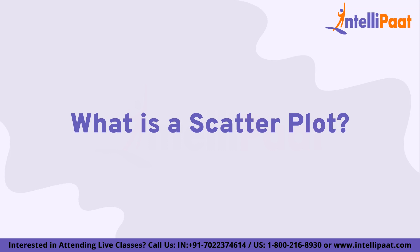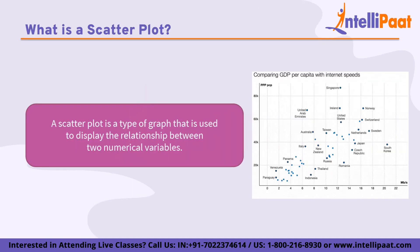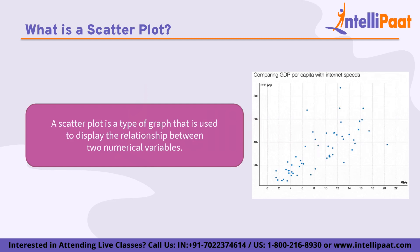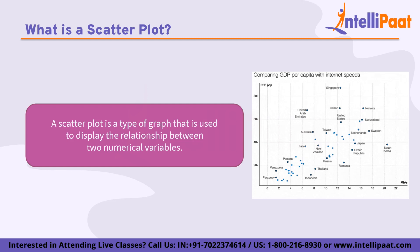Let us begin by understanding what is a scatter plot. A scatter plot, also known as a scatter diagram, is a type of graph that is used to display the relationship between two numerical variables. The data is plotted as a collection of points where each point represents a single observation in the data set. In a scatter plot, one variable is plotted on the x-axis and the other variable is plotted on the y-axis. The resulting graph shows the relationship between the two variables, with each point indicating the value of the two variables for a single observation in the data set.